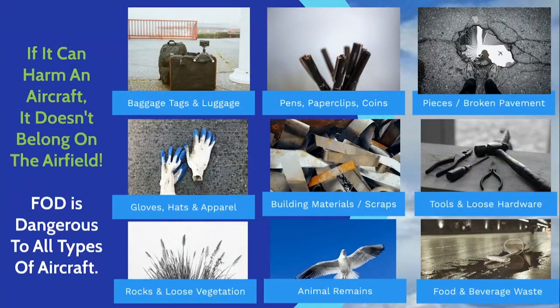FOD is dangerous to all types of aircraft. Types of FOD can include baggage tags and luggage, pens, paperclips, coins, and pieces of broken pavement. It can also include gloves, hats, building supplies, tools or loose hardware, and rocks and loose vegetation. Animal remains and food and beverage waste are also common types of FOD found on an airfield.